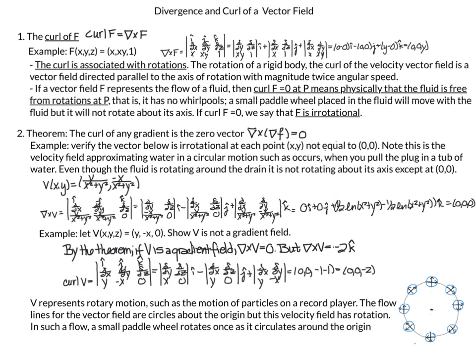We have this important theorem: the curl of any gradient is 0. So in other words, if you take the gradient of a function f and then you take the curl, it should equal 0. For example: verify the vector below is irrotational at each point not equal to (0, 0) — so we're not looking at the origin.